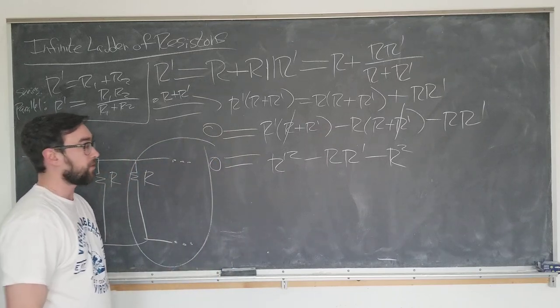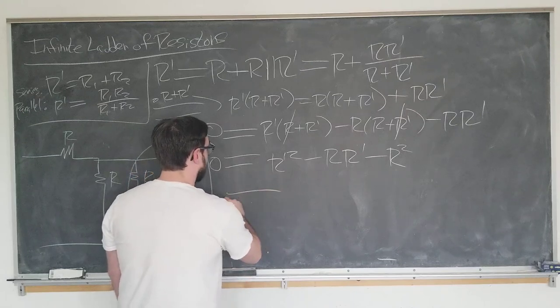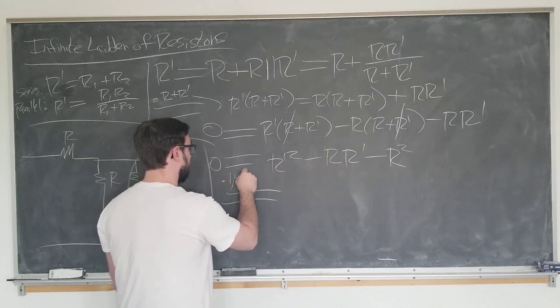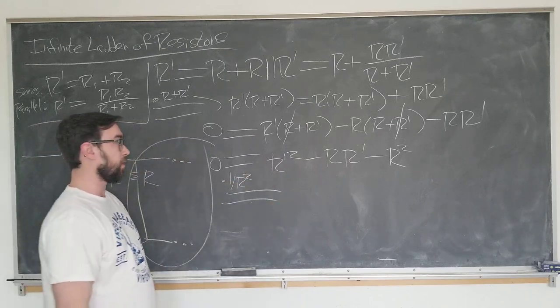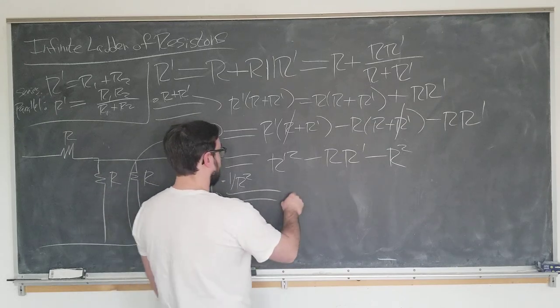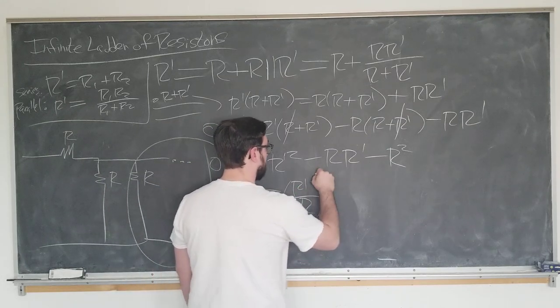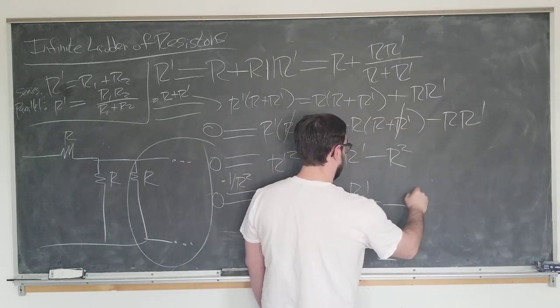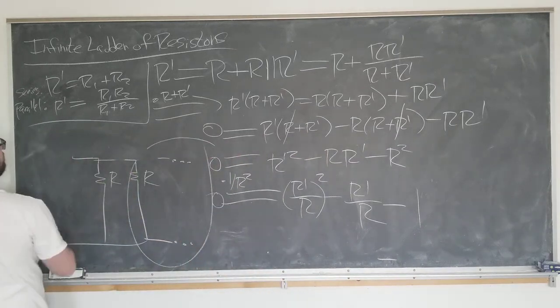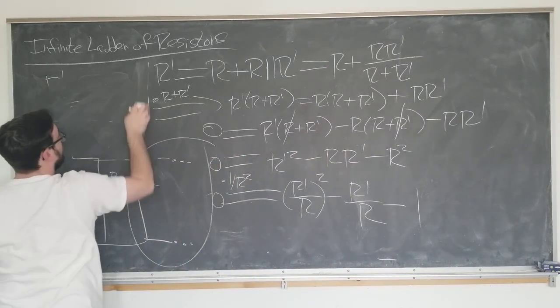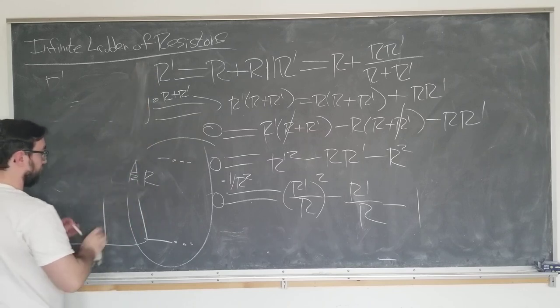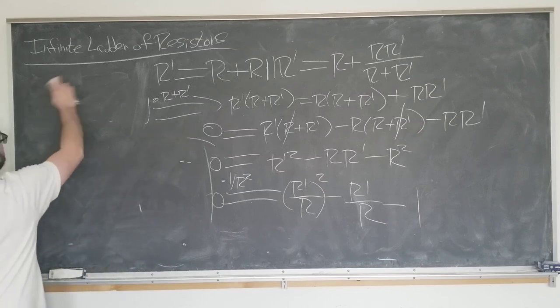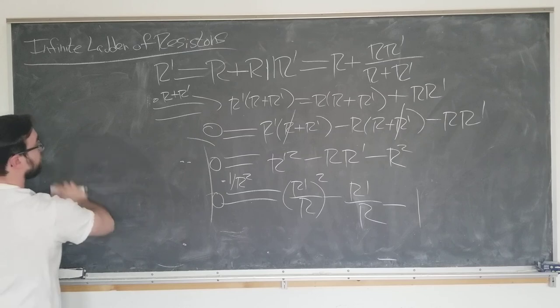Well, let's actually divide left and right by R squared, because we want a single variable to apply the quadratic formula to. This becomes zero equals R prime over R squared minus R prime over R minus one. So now we have to solve the quadratic. We have done all the physics. Everything we're doing now is just algebra. But it is interesting algebra in the sense that it will yield us the golden ratio.